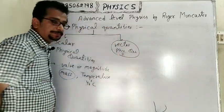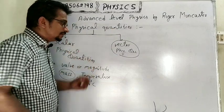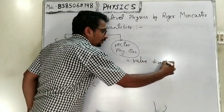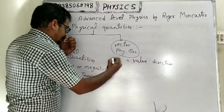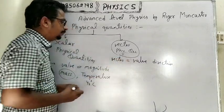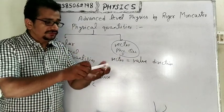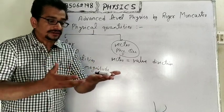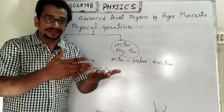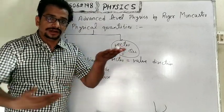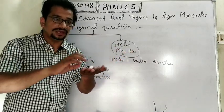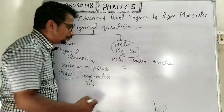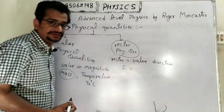Any physical quantities that don't require a direction are known as scalar physical quantities. Vector physical quantities are those which have both value and direction. The best example is force. If we apply force on an object, we need to know the direction of the applied force — whether it is vertically downward, outward, left, or right. So force is a vector quantity.